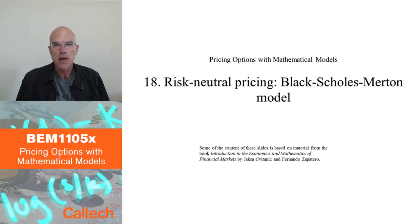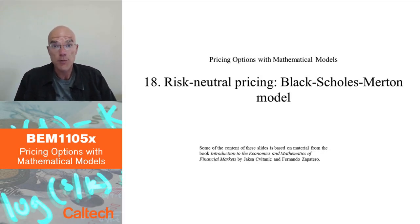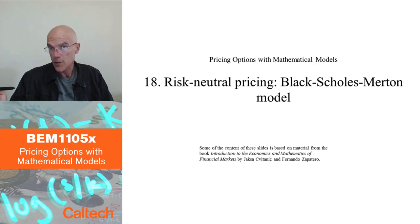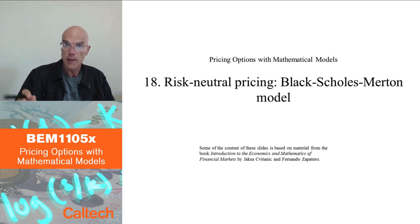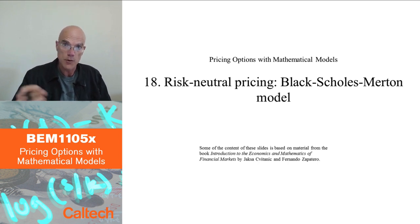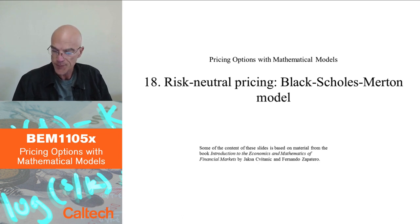Let's see how risk-neutral pricing works in the Black-Scholes-Merton model. We already know how to get the Black-Scholes formula, but not with risk-neutral pricing. We saw how to get it with partial differential equations, which is how Black and Scholes did it. But this is a more modern way to do it.